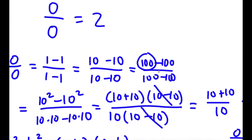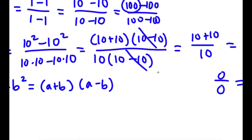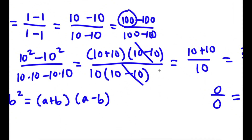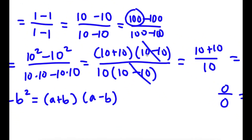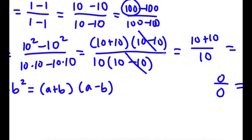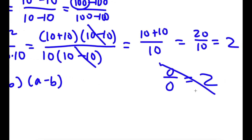Now, obviously 0 over 0 is not equal to 2. The mistake in this proof is right here, when I canceled out 10 minus 10 over 10 minus 10. What is 10 minus 10? It's 0. So I'm technically canceling 0 over 0, but 0 over 0 is not equal to 1 — I can't cancel these out. That's the mistake, and 0 divided by 0 is not 2.